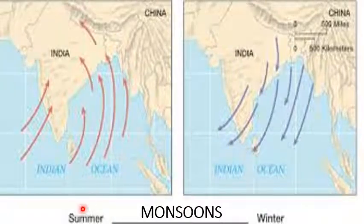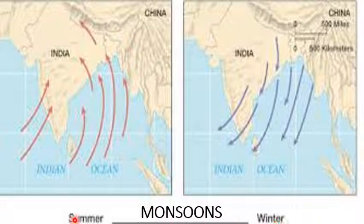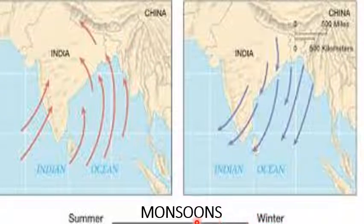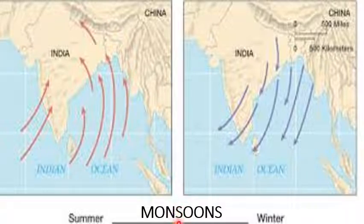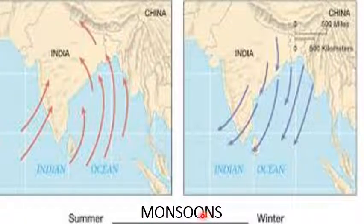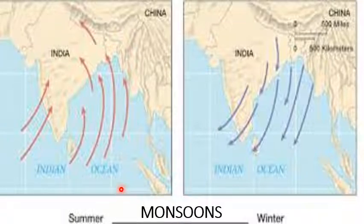Now, monsoon winds, also known as summer monsoons or winter monsoons. Summer monsoon and winter monsoon are the two branches of monsoon winds. Monsoons are periodic winds, also called seasonal winds. The word monsoon is derived from the Arabic word 'Mawsin', which means season. These winds change their direction after six months due to the differential heating of land and water.